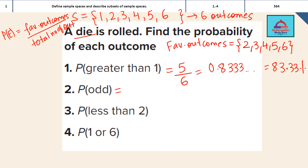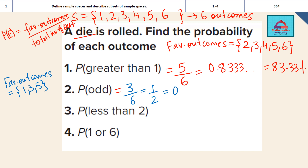Next is the probability of odd. The favorable outcomes are the odd numbers: 1, 3, and 5. There are three odd numbers, so the probability is 3 out of 6, which simplifies to 1/2. In decimal that is 0.5, and in percentage it is 50% — just multiply by 100.